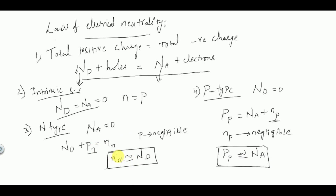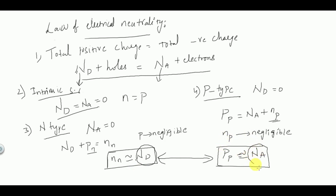These two equations represent the majority carrier concentration in N-type and P-type semiconductors respectively. The majority carrier concentration in N-type semiconductor is equal to ND — the donor atoms. The majority carrier concentration in P-type semiconductor is equal to NA — the acceptor atoms.